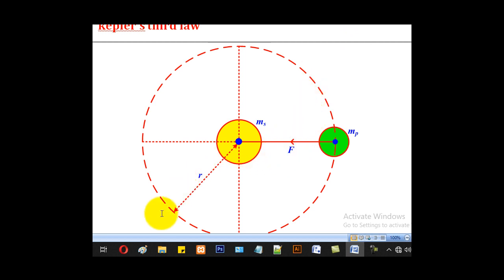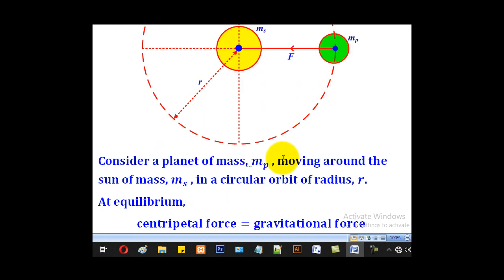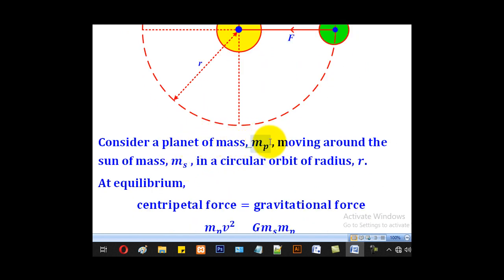This is the radius of that orbit. This is the mass of the sun. This is the mass of the planet. Consider a planet of mass mP moving around the sun of mass mS in a circular orbit of radius r.